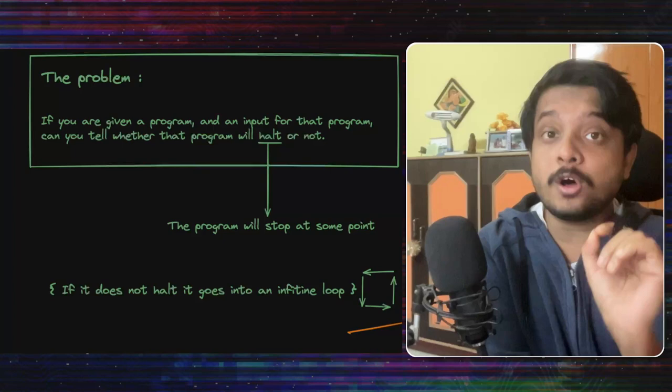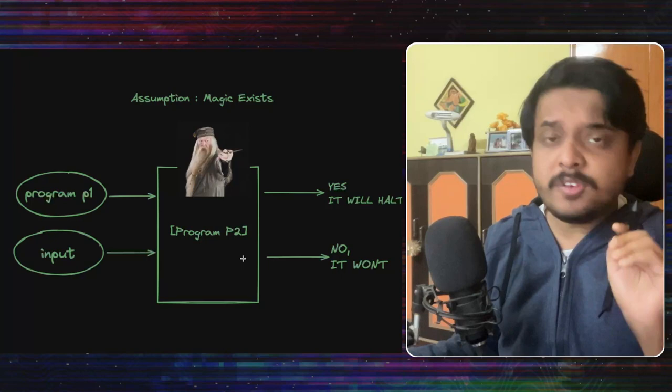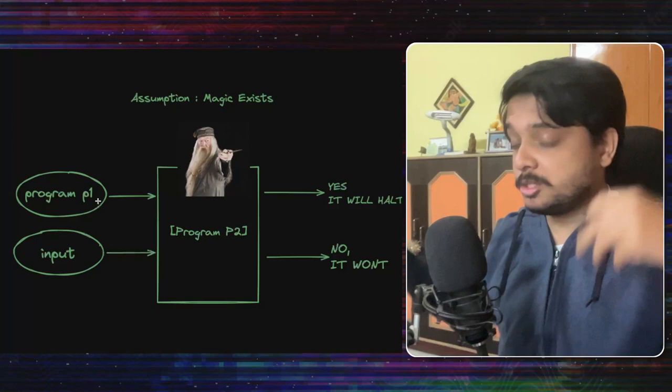We will prove this by contradiction, which means we will start with some assumption and we will see in the due course of time how it does not make sense. And we will understand that assumption itself was wrong. So let's assume that with some magic and some spells, we create a computer or a program which can solve the halting problem.